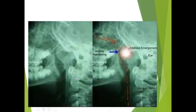You can see in this X-ray — a soft tissue neck lateral view — the adenoid is covering more than two-thirds of the space of the nasopharynx. There is very little space remaining through which the patient or child can breathe.